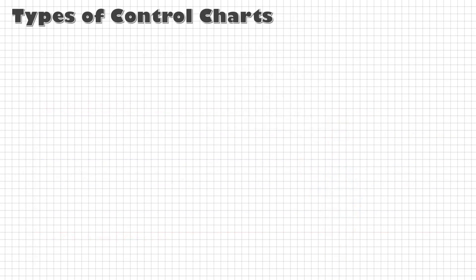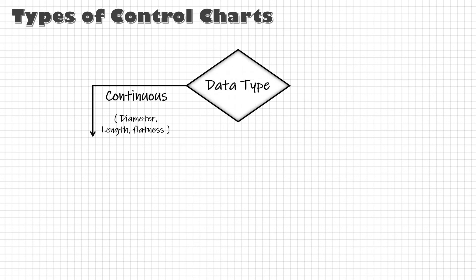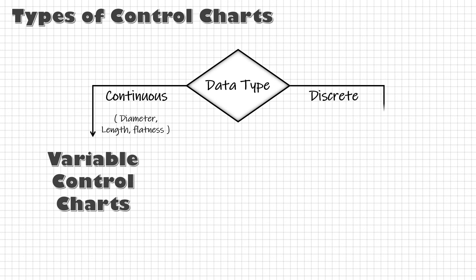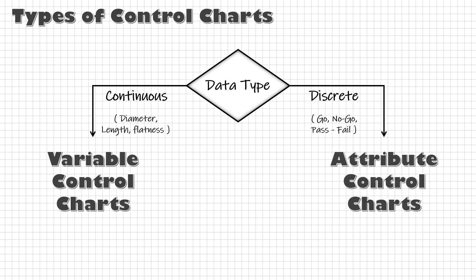Before ending this video, let me quickly tell you that there are basically two types of control charts. If the data is of continuous nature that is diameter, length, flatness, we use variable type of charts like the X bar chart. And if the data is of discrete nature, that is go no go, pass fail, we use attribute types of control charts. We will study a little more about them in the next video. See you there.